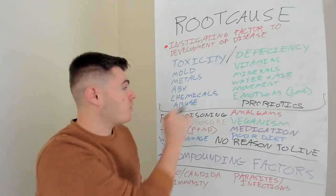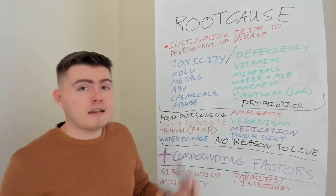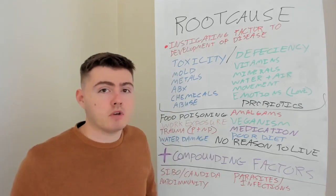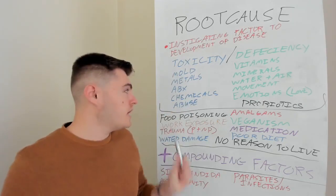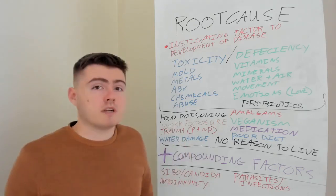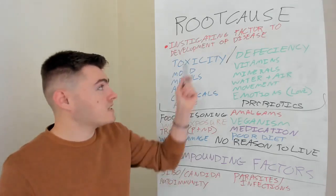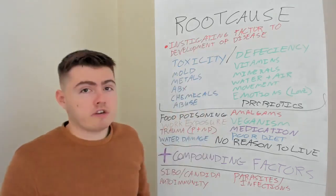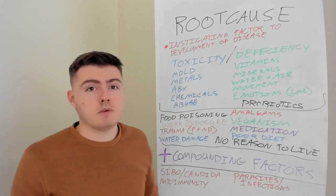Finally, we've got abuse — physical, mental, or emotional. Physical abuse can cause trauma inside the body; emotional abuse can cause trauma in the body and that is toxic. If you're in a toxic relationship, or had toxic relationships when you were younger, that can be a factor.